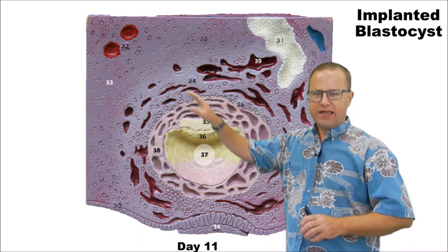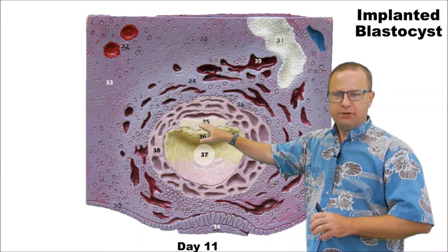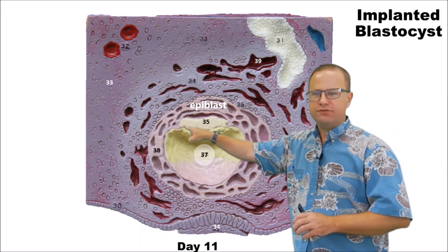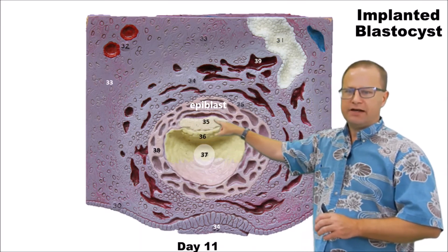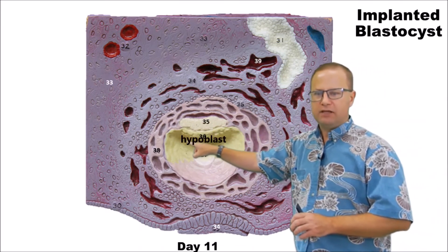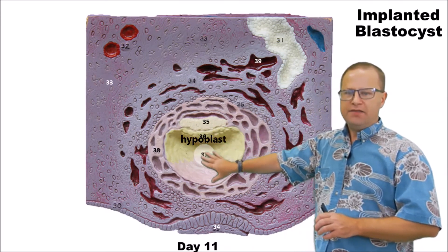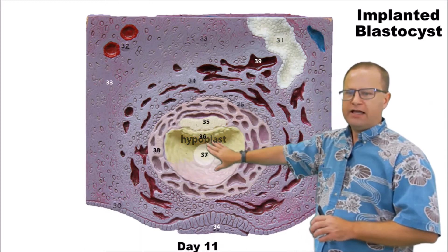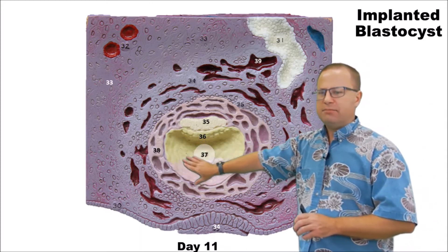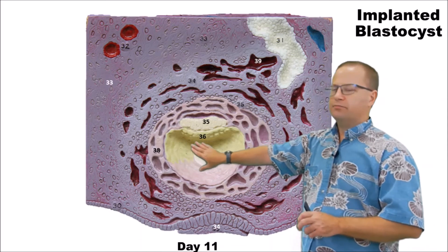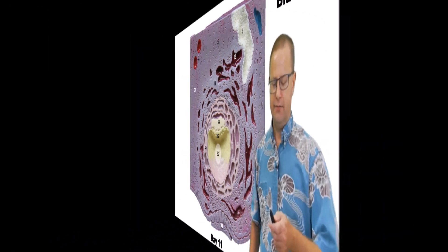Other structures we have in here: remember this was our epiblast, which was part of our embryonic disc, and below that was our hypoblast. This hollow area in here is actually probably best called the archenteron, which will become part of the primitive gut.